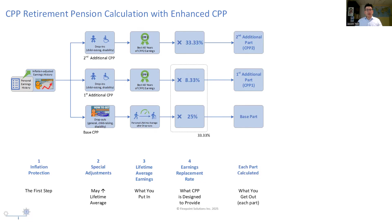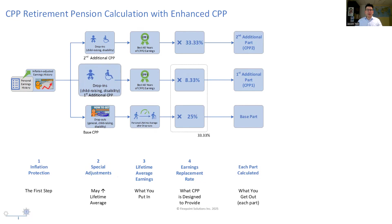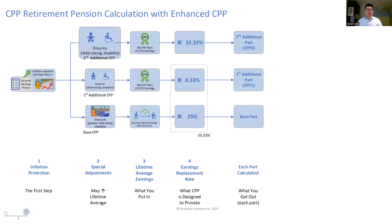For step number two, there are no longer dropouts as a special adjustment. Instead, the enhanced CPP has what are known as drop-in provisions. A drop-in means that income that wasn't actually earned is calculated, and that pretend income amount is used to replace your real income if the pretend income is higher. This will only be done if it will increase your CPP retirement pension.